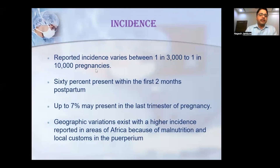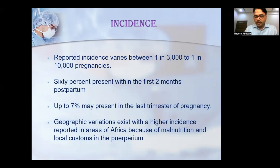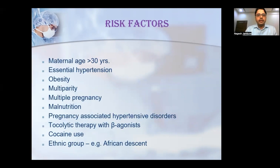The incidence of peripartum cardiomyopathy is around 0.1%. Of these, 60% of patients present within two months postpartum, and up to 7% may present in the last trimester of pregnancy. Higher incidence is seen in Africa due to malnutrition and local customs in the peripartum period, highlighting the importance of nutritional deficiency in peripartum cardiomyopathy.